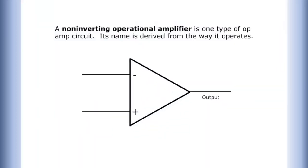A non-inverting operational amplifier is one type of op-amp circuit. Its name is derived from the way it operates.